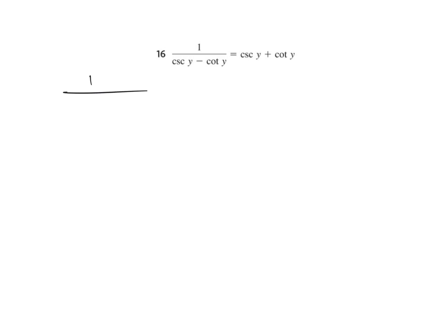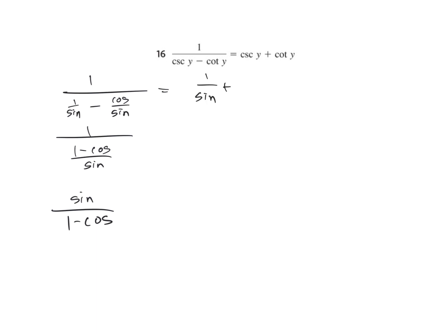Let's make a cosecant. This is 1 over 1 over sine minus cosine over sine. We get 1 over 1 minus cosine over sine, which with keep change flip becomes sine over 1 minus cosine. The right side is 1 over sine plus cosine over sine, giving 1 plus cosine over sine.